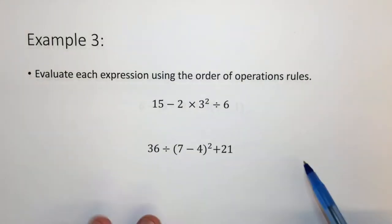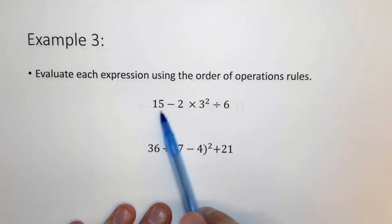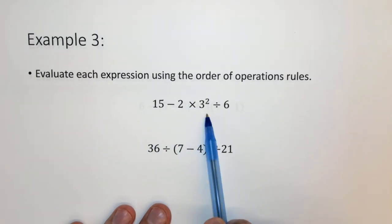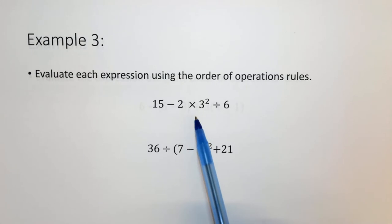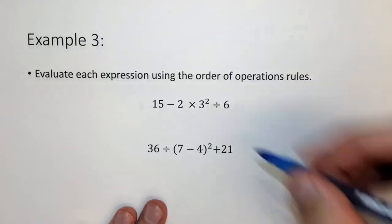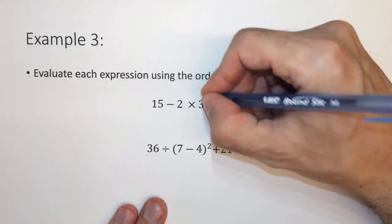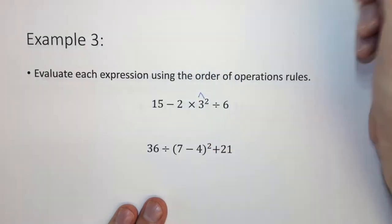Let's look at another example. Here we have 15 minus 2 times 3 squared. Well, in this case, you want to do the 3 squared as the very first thing. So something raised to a power is even higher in priority than multiplying and dividing. So in order to do that, we take this, and we square it, and we get 9.